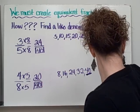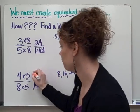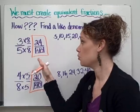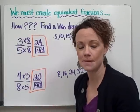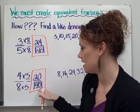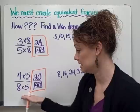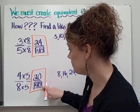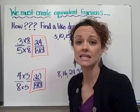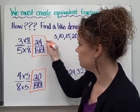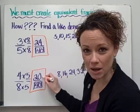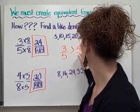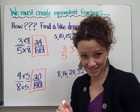Alright, so now we have two new fractions. We have three fifths being shown as twenty-four fortieths. It's still worth the same amount because they are equivalent. And we have four eighths being shown as twenty fortieths. Again, still equal to each other. Now we can compare them. If our denominators are the same, all we need to do is look at our numerators to see which one is larger or less or equal to. So twenty-four is greater than twenty, which means that three fifths is greater than four eighths.